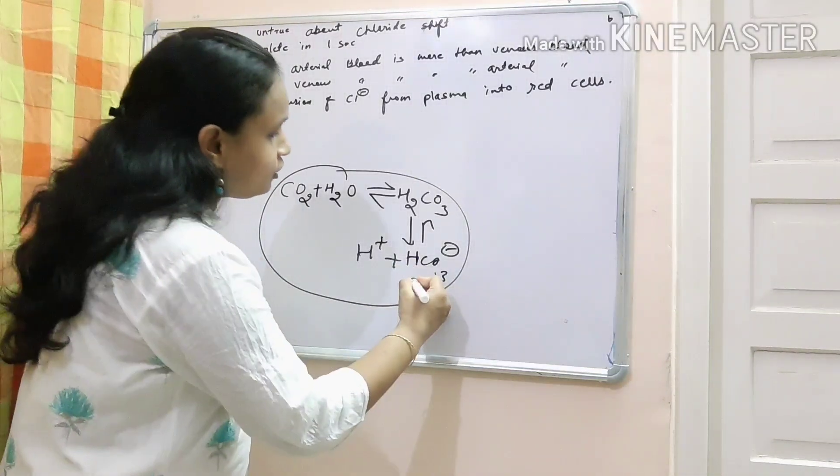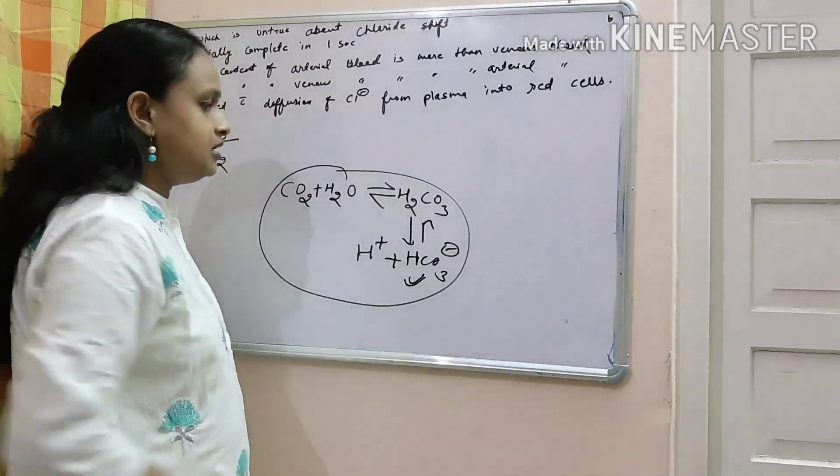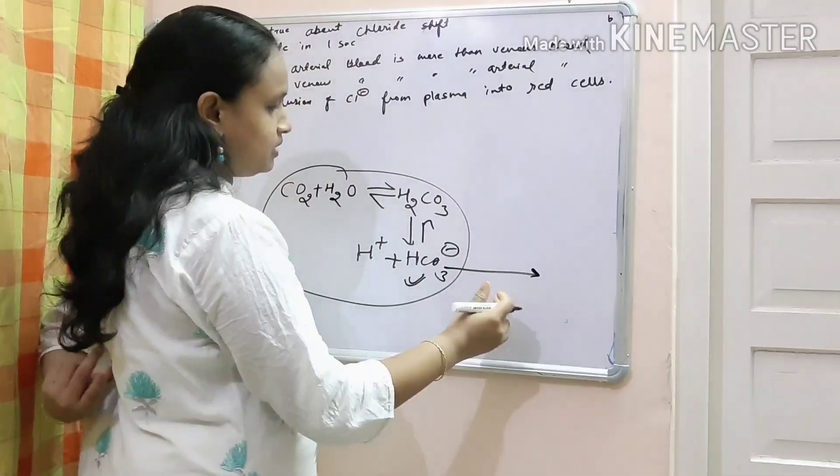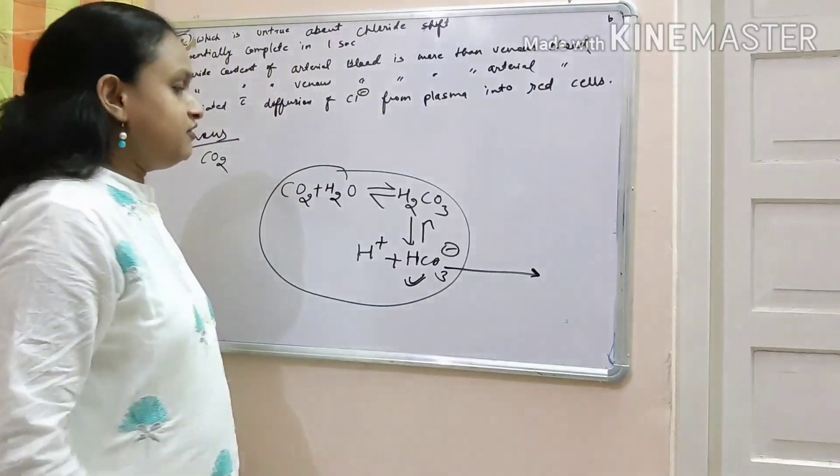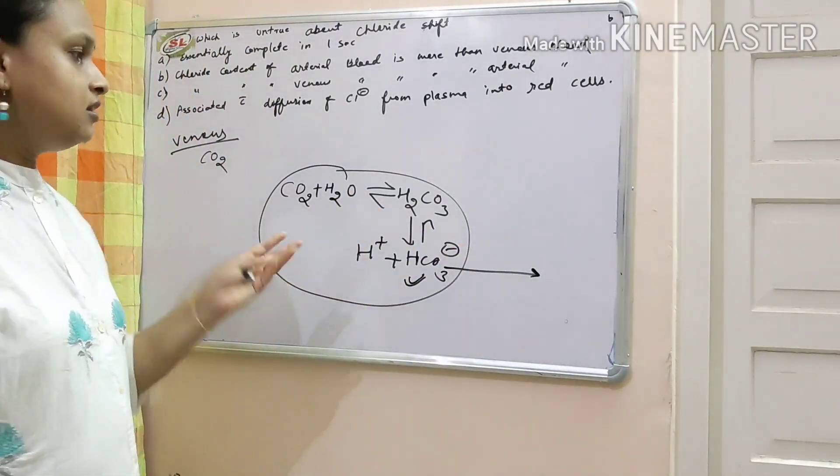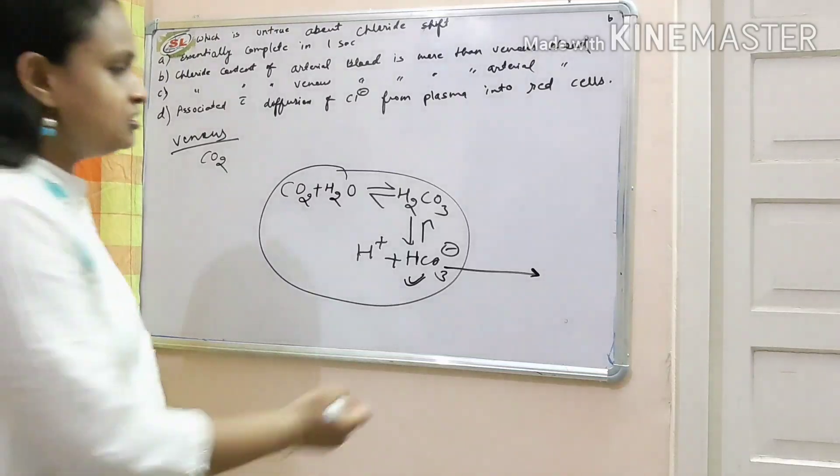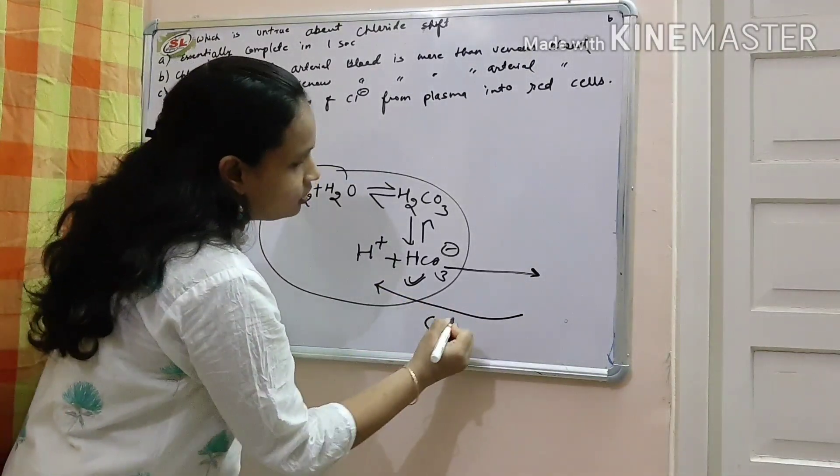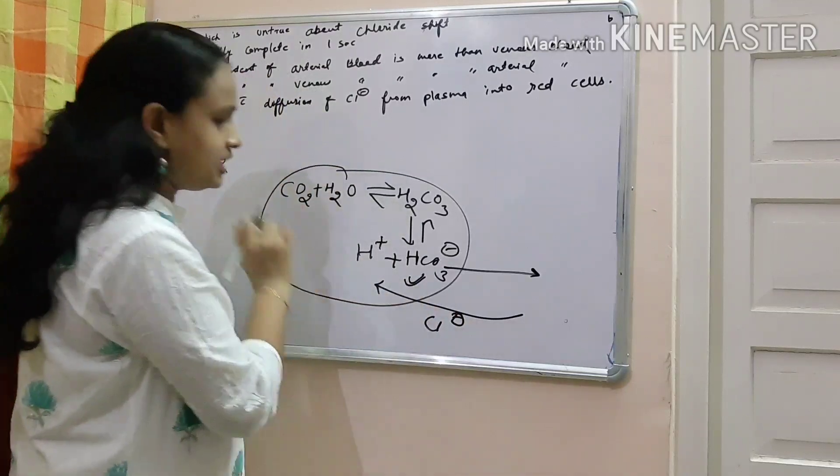There is a lot of bicarbonate in the RBC. So this bicarbonate tends to leak into the plasma. But when the negative charge goes outside, cell will feel electronic imbalance. So in exchange of bicarbonate, it takes chloride into the cell.